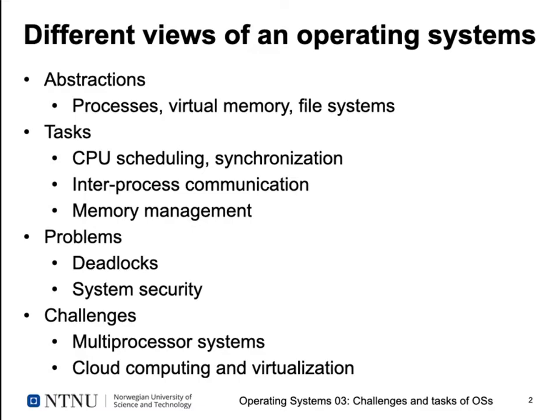In order to enable this, an operating system has to perform a large number of tasks. Some of the most important tasks are scheduling the CPU between different processes that want to run at the same time; synchronization between processes that need to cooperate or use the same resource at the same time; enabling communication between processes — so-called inter-process communication; and managing the memory of our computer, including virtual memory management.